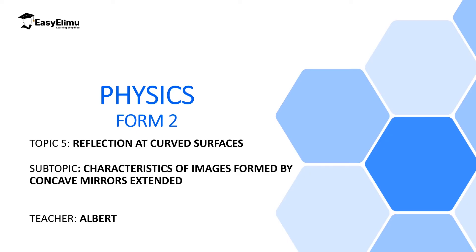Welcome to ECE LIMU learning simplified and welcome to this lesson. In the previous lesson we discussed the characteristics of images formed by concave mirrors when the object is placed at different places in front of the mirror. We looked at when the object is placed beyond C, and the image is formed between C and F, diminished and inverted. We also looked at an object at infinity, where the image forms at F and is inverted, and an object at C where the image forms at C, same size and inverted.